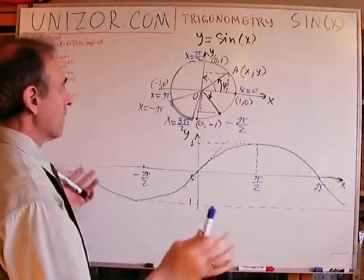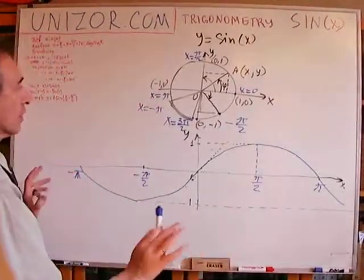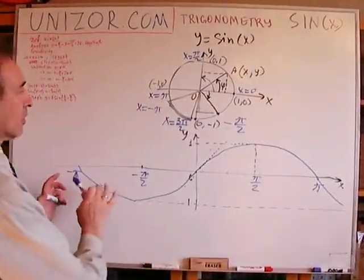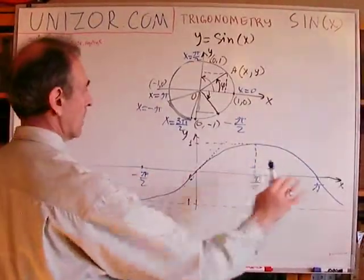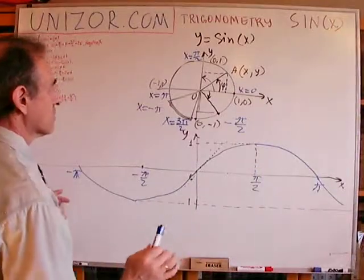So all I'm saying is that you will have this waving function, changing from 0 to the maximum of 1, then back to 0, then to the minimum of minus 1, then back to 0, and so on. If I'm circling round and round, obviously this is a periodic function with a period equal to the full circle, which is 2π. That's what I wanted to talk about regarding the behavior of this function.